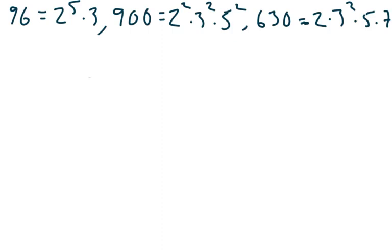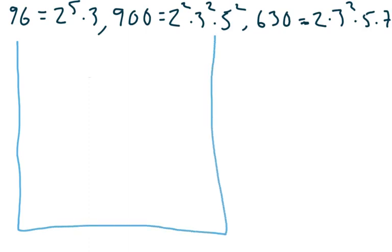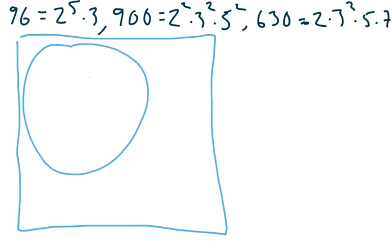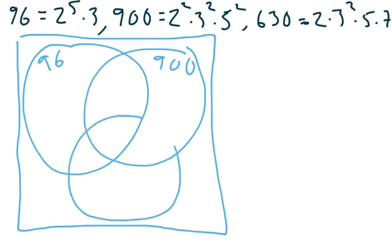So suppose you want to find the greatest common divisor and least common multiple of those. You can create a Venn diagram with three numbers. You just need to have three sets. So you make one set to represent the factors of 96, another set to represent the factors of 900, and a third one to represent the factors of 630.